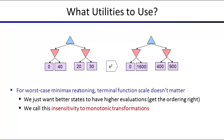What utilities should we use? In minimax, utilities played a big role, but in expectimax the exact choice plays an even bigger role. Let's do a comparison. We have outcomes ranked 1 through 4 from bottom to top. If you run minimax, you do the same thing in both trees, because all you do is compare values — higher or lower is what matters. Here, all we did was square the entries.